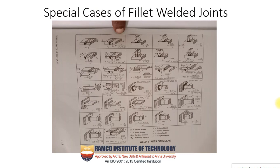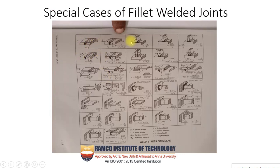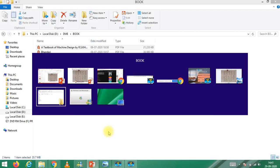Before moving to today's topic, there are some special cases of fillet welded joints. It is not always that we use a butt joint or a lap joint. There are special cases of fillet welded joints to be used. This is available in your data book page number 11.3. If you look into your data book page number 11.3, you can see the same list of diagrams.